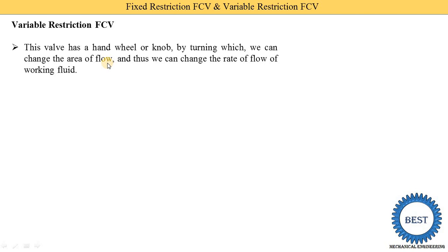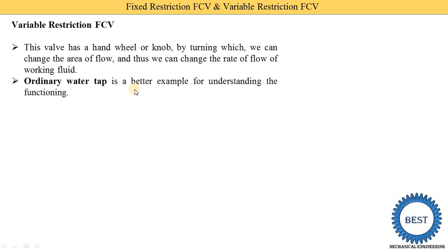When we rotate the knob using our hands, we are just changing the area. When we fully open the water tap, the area is fully open and the flow rate of the water is higher. By changing the area, we are able to change the flow rate. Flow rate Q is equal to area multiplied by velocity. Increasing the area increases the flow rate; reducing the area reduces the flow rate. An ordinary water tap is a good example for understanding this functioning.